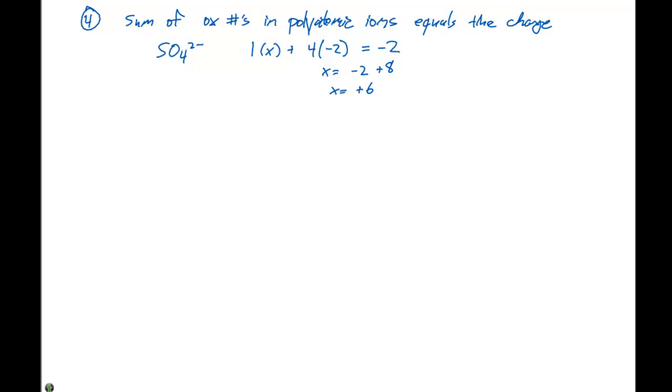So here our oxidation state or oxidation number of sulfur in SO4²⁻ is going to be plus 6. And the sum of all these oxidation numbers of the atoms in polyatomic ions has to equal the charge.